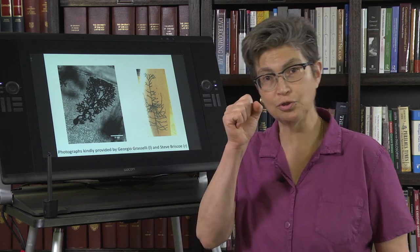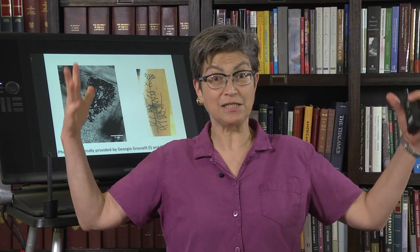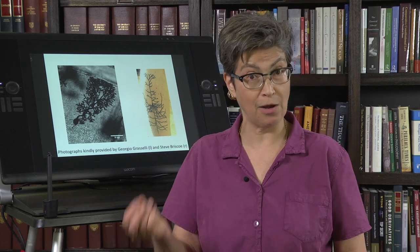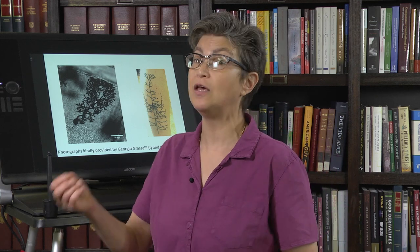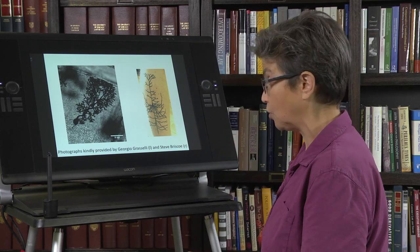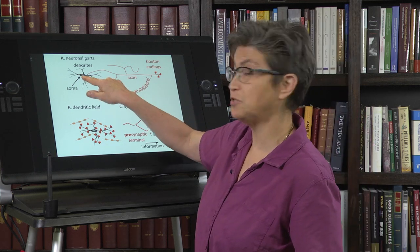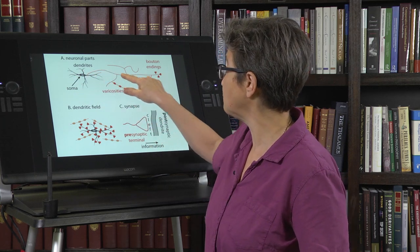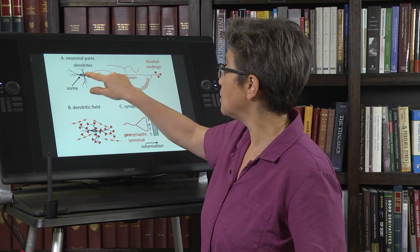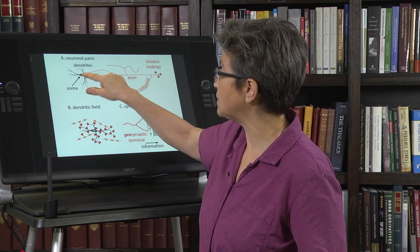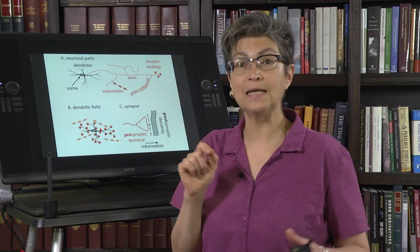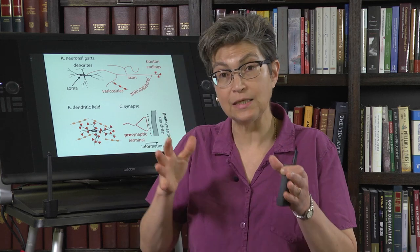Looking at these two cells — and there are many other different types — neurons aren't just simple cells. They have lots of parts with names. One distinguishing characteristic is that neurons have these specialized parts: a soma, also known as a cell body; dendrites next to the soma; and an axon, which can be very long.